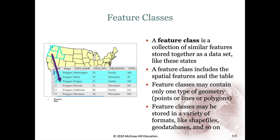A feature class is when we take a bunch of these features and store them together as a layer. A feature class includes both the spatial features and the table associated with them, or the attribute table.